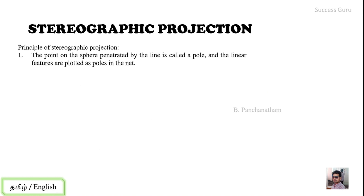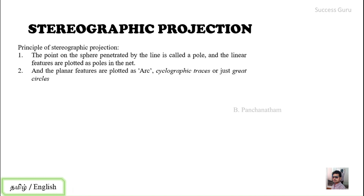A point on the sphere penetrated by the line is called a pole, and linear features are plotted as poles in the net. When dealing with linear features like lineations marked by stretched grains, slickensides, or striations, we plot them as a pole in the stereographic projection. Planar features are plotted as an arc, also known as a cyclographic trace or great circle. Today's class covers linear features; planar features will be covered in the next video.